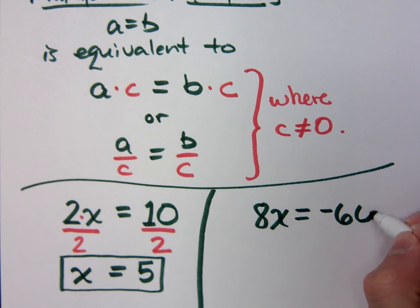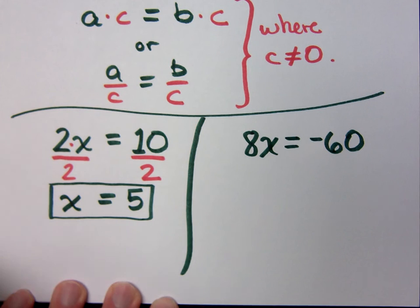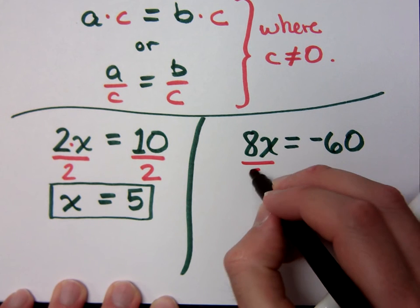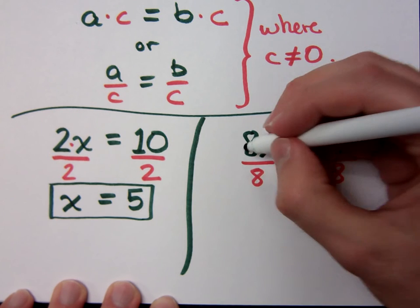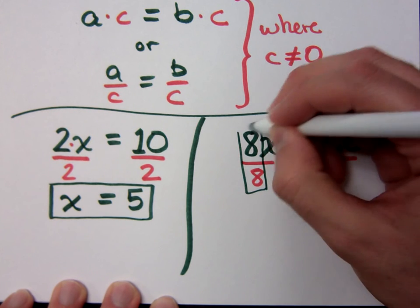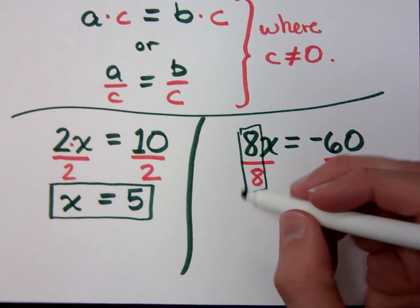How about 8X equals negative 60? I'm doing this because you guys don't respond and you're emotionless. You do what? Divide both sides by 8. And that's going to get my X by itself. Because what is 8 over 8? 1, which is that multiplicative identity. Okay. So what does X equal?